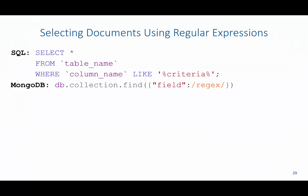We can also select documents using regular expressions. In SQL, we used wildcards — selecting from a table where the column matches criteria using percentage signs. In MongoDB, we do this by saying db.collection.find, then specifying the field to filter on, and then any regular expression. Regular expressions are a whole different animal, and I encourage you to research them on the web — there's plenty of documentation out there.